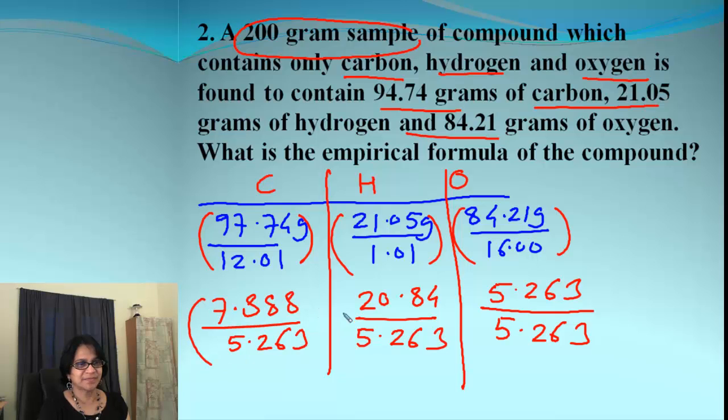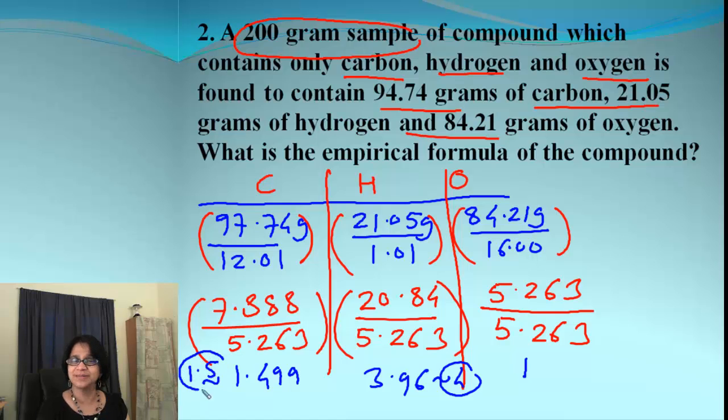And then what do we get? We end up getting for this one you know for sure it's 1. For this one it is 3.96. And for this one I am getting 1.499. So if I want to round up this this could be 4 and this could be 1.5. I cannot round up to 2 because it is not close to 2. Neither it is close to 1. So what do we do?